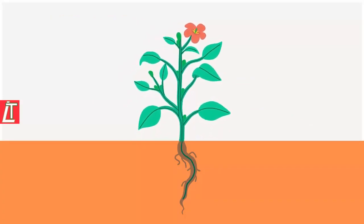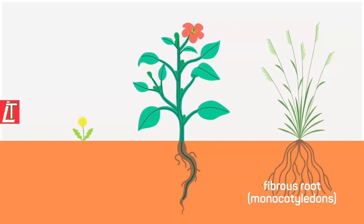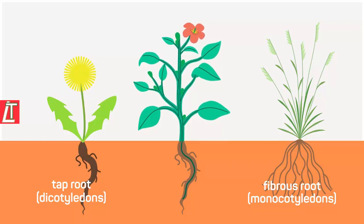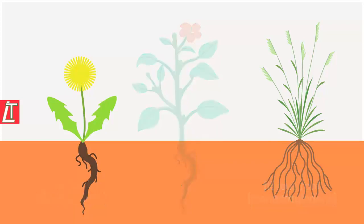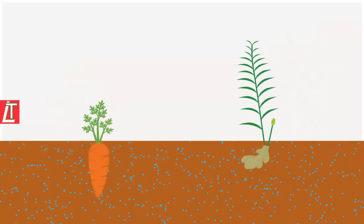The shape of this root system can vary. It may be fibrous as in dicotyledons. It will also depend on the habitat of the plant and the availability of water. Carrots and ginger for example are plant roots that we eat.